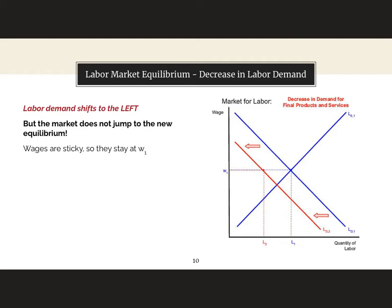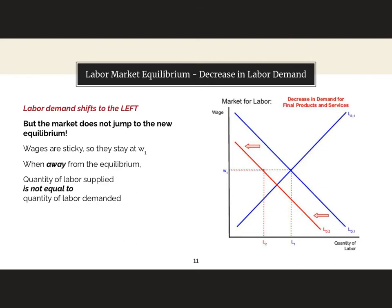But we do not jump to the new equilibrium. If wages are sticky then wages stay at w1. When we're away from the equilibrium the quantity of labor supplied is not equal to the quantity of labor demanded. At w1 the quantity of labor supplied is on the blue labor supply curve — that upward sloping curve — which is at l1. The quantity of labor demanded on the red labor demand curve is at l2.